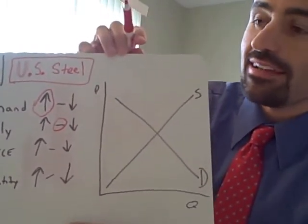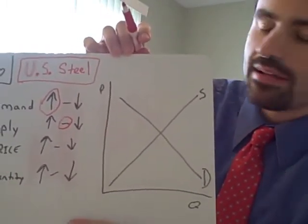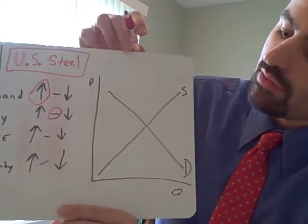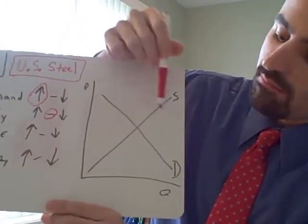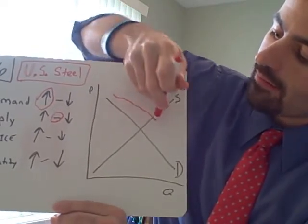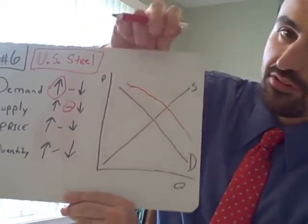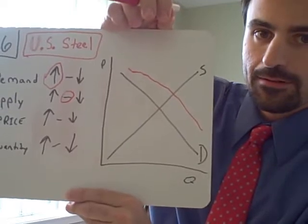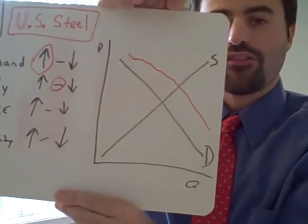Supply unaffected. Demand graph. Here you can say up, but it's a bad habit to get into. So why don't you say we're going to demand more and shift right. Demand more, shift right.